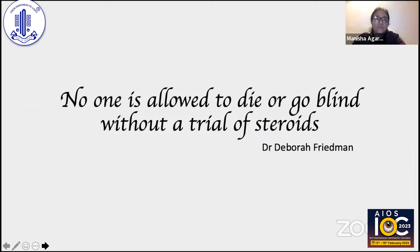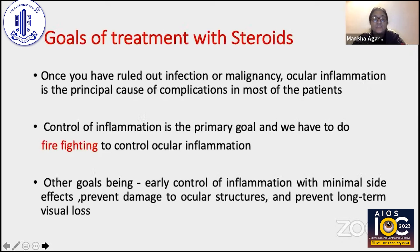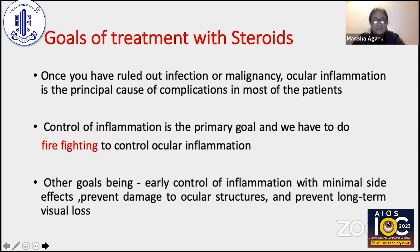No one is really allowed to die or go blind without a trial of steroids. It is a very valid saying when dealing with patients of uveitis that we cannot declare a patient as non-responsive until we have not tried corticosteroids. Once you have ruled out infection or malignancy, ocular inflammation is the principal cause of complications, and control of inflammation is the primary goal of managing any patient of uveitis — essentially firefighting to control ocular inflammation as early as possible.